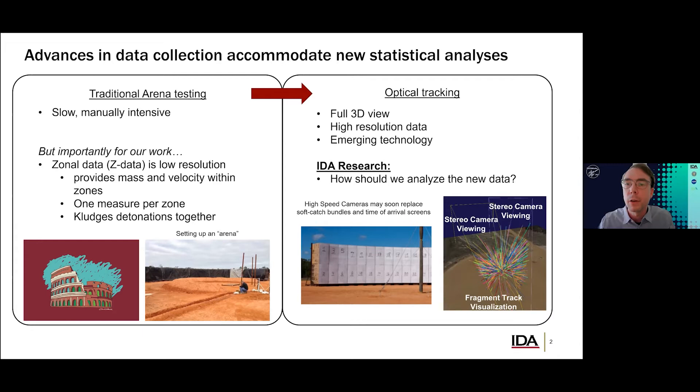On the right side is an example of new data collection methods that are coming along. This is the optical tracking, aka high-speed camera. These promise to improve data collection over catch bundles on the left. And with the high-speed camera, we may be able to observe more fragments, but importantly, we will have better data, full 3D data, and higher resolution data, which will enable better analysis, but this is still emerging technology. The open question that I'll address is, how do we analyze this new and complex data? This is the gap that we want to fill in our research.